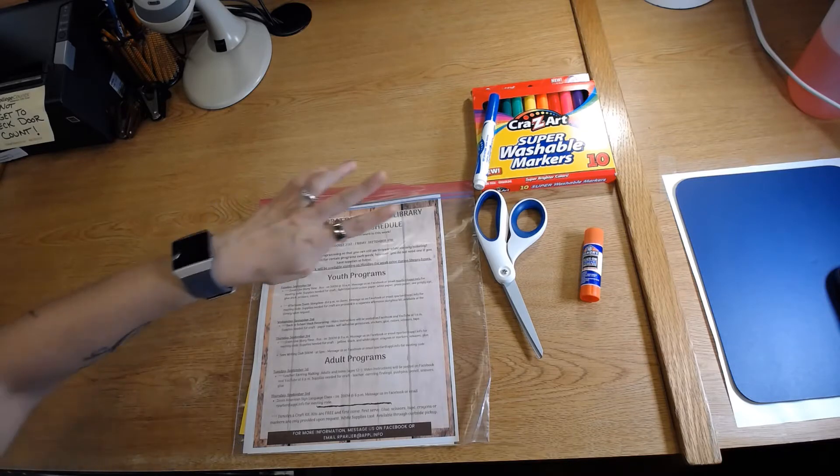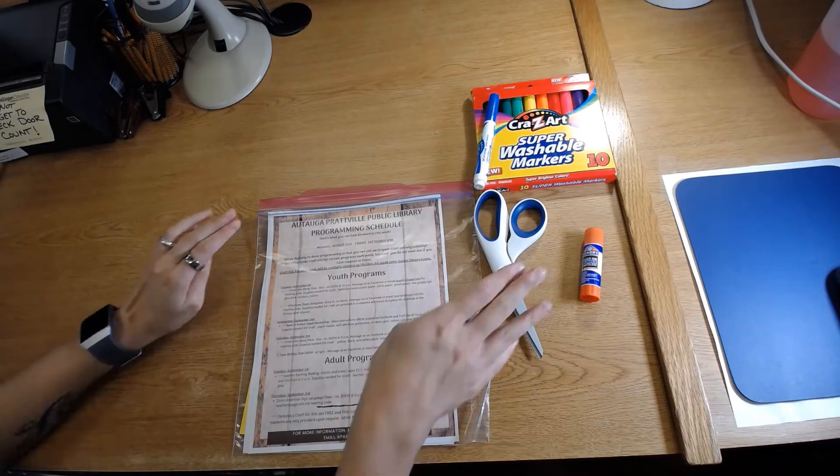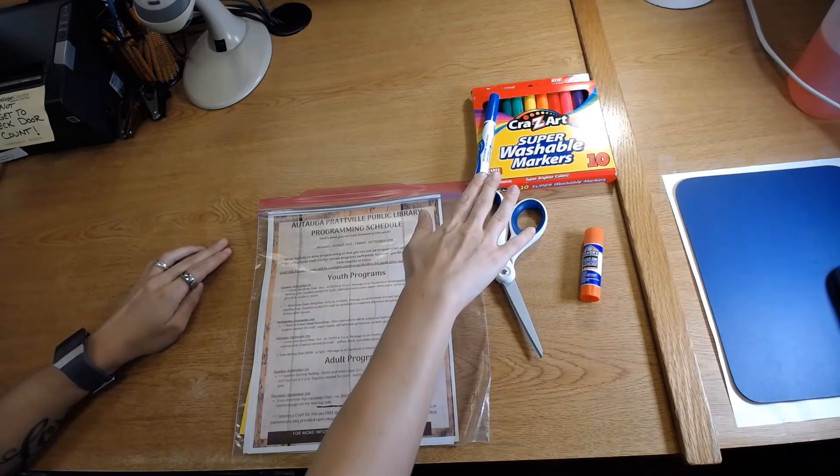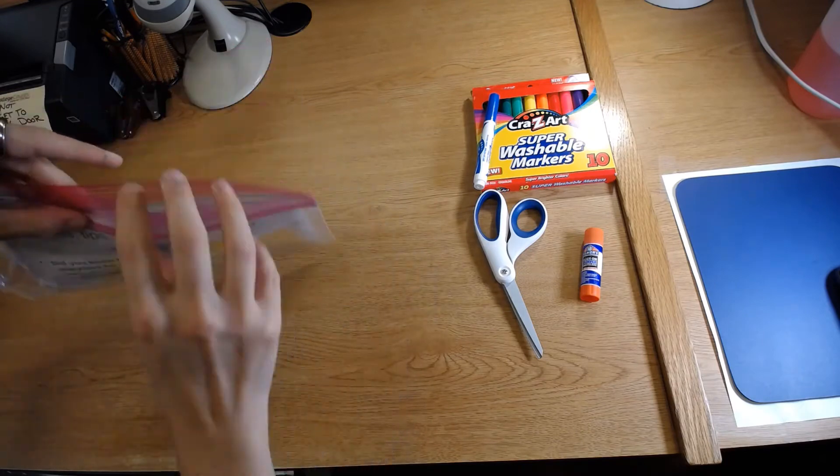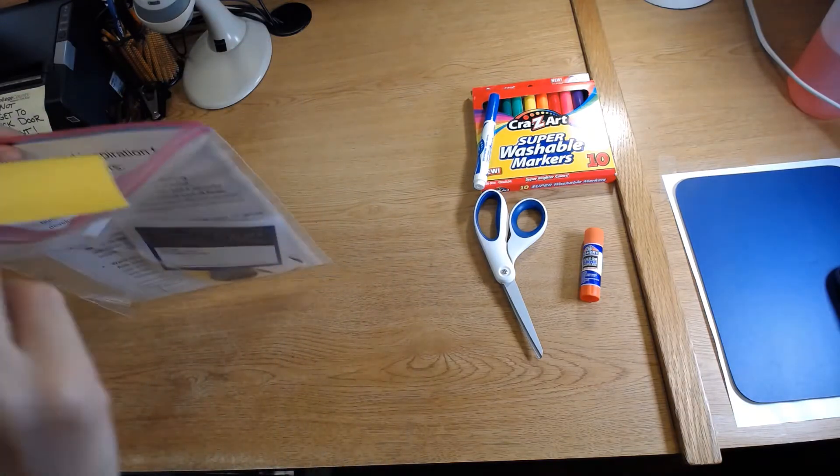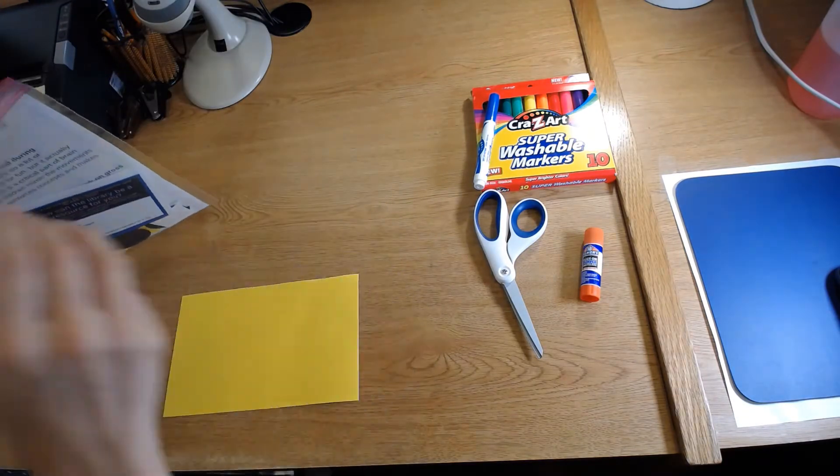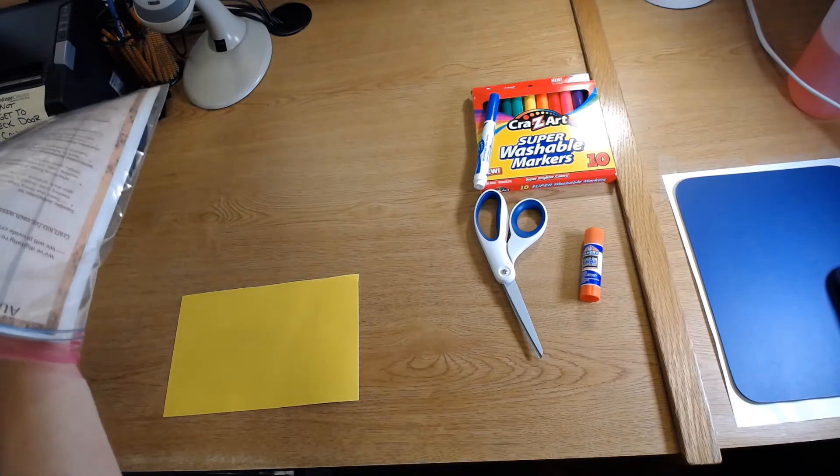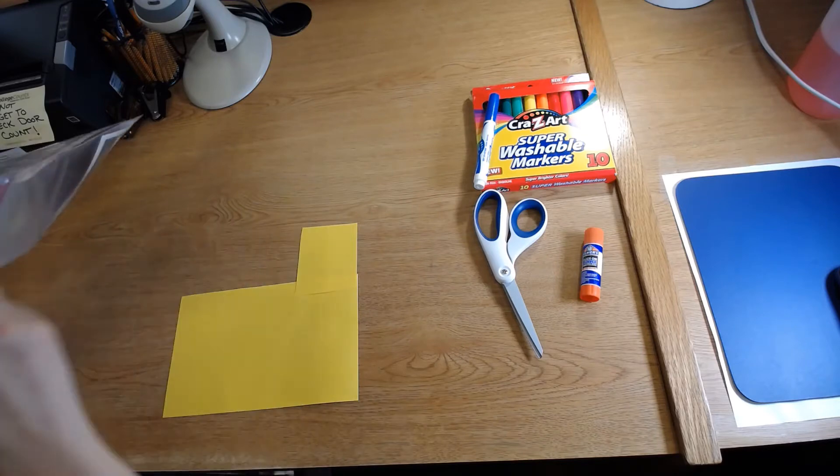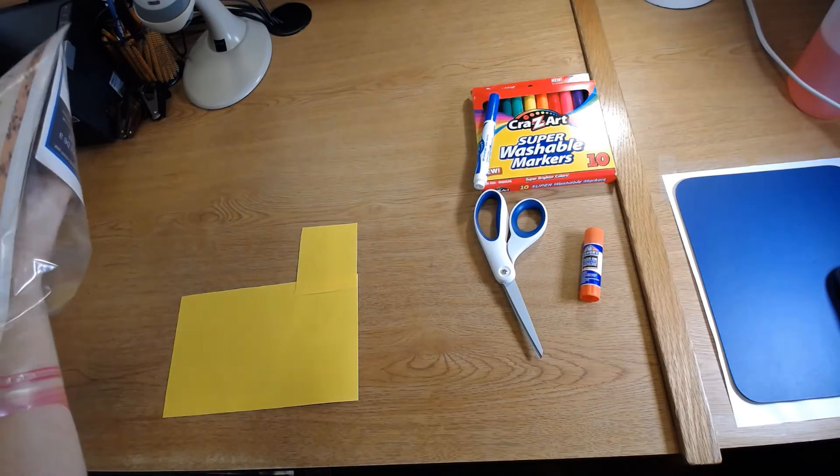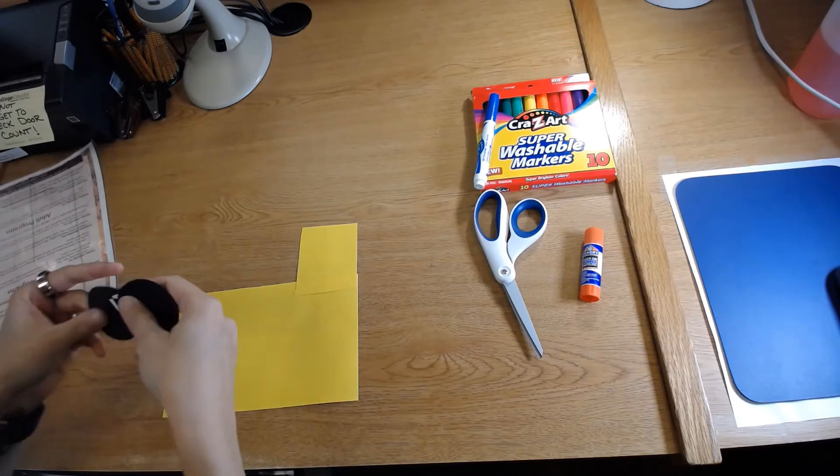We will need our scissors, our glue stick, and our colors, and then we'll need the rest of the contents of our kit for the week. So we'll need a big yellow rectangle and a small yellow rectangle, two black circles...